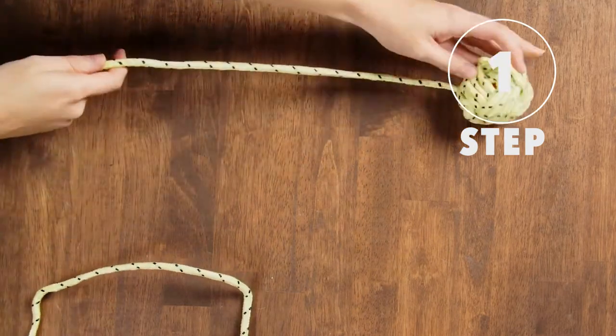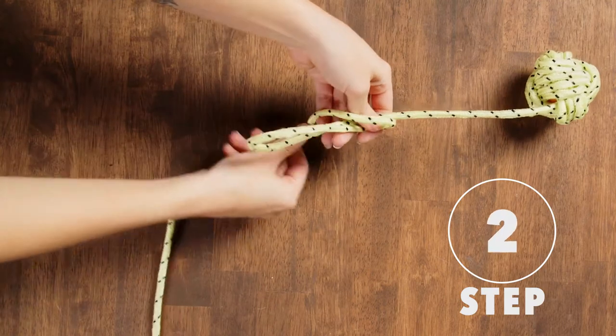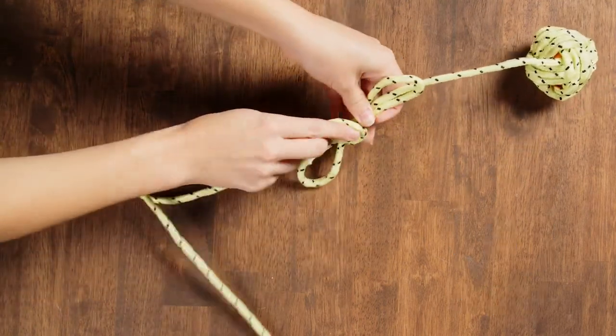Step 1. Grab the long end of your rope and make a loop with it. Step 2. Wrap your rope around the loop four times, wrapping it downwards back towards the ball.